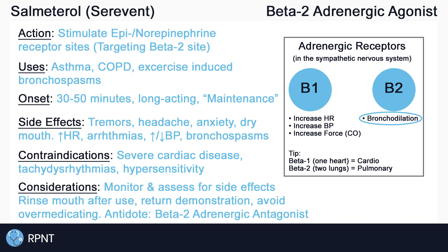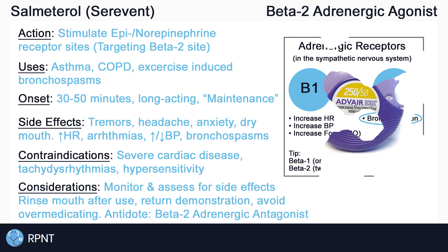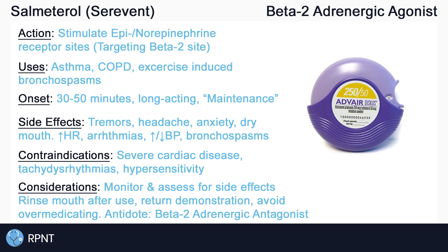Salmeterol is most often administered in a combination inhaler known as Advair. Advair is the combination of two medications: the first being a bronchodilator, which is salmeterol, and the second being a corticosteroid, which is fluticasone, also known as Flovent.